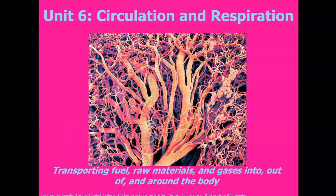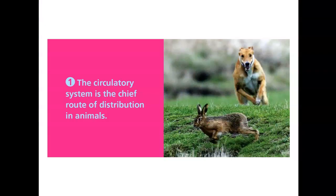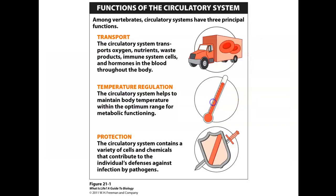Today we're going to cover unit 6 on circulation and respiration. The circulatory system is the chief route of distribution in animals, distributing oxygen and nutrients, and taking away carbon dioxide and waste products from the tissues. Its functions include transport, temperature regulation, and protection.